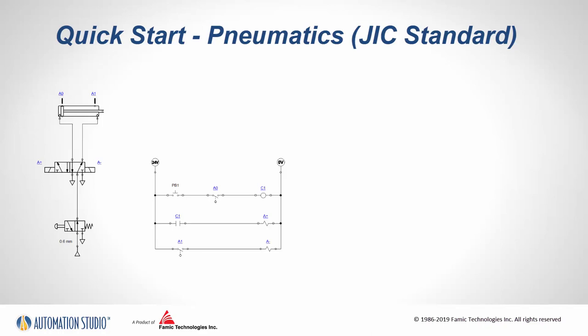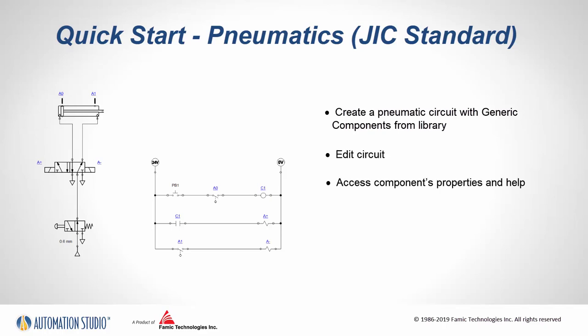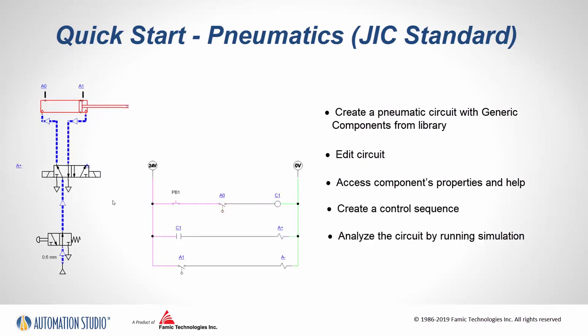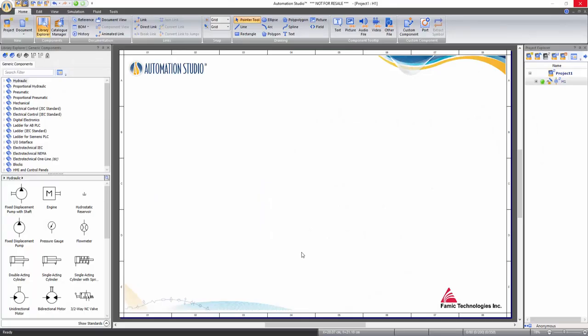This training video outlines the steps to create your first pneumatic or electro-pneumatic circuit in Automation Studio using JIC standards for electrical control. In the process of recreating this circuit, the user will learn how to create a pneumatic circuit with generic components from library, how to do circuit addition, how to assess component properties and help, how to create a control sequence, and how to run simulation and analyze the circuit.